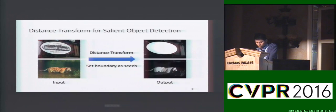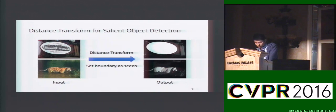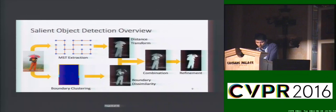For salient object detection, we set the boundary pixels as signals and run our distance transform. Here are some examples. We also adopted global contrast information and a post-processing step to further improve the output quality.